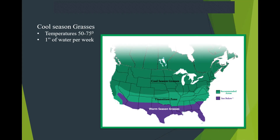Further south, where it's hot and dry, we tend to grow mostly warm season grasses that are better adapted to that environment. We live right in the transition zone where northern and southern climates overlap. This presents unique challenges — we're living through that right now with temperatures running in the upper 90s and extremely dry conditions. This is very stressful for a cool season grass; it's way outside of its comfort zone.